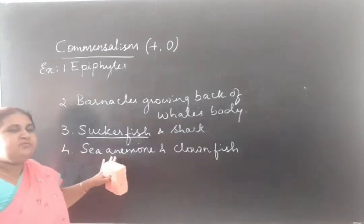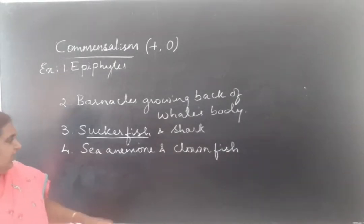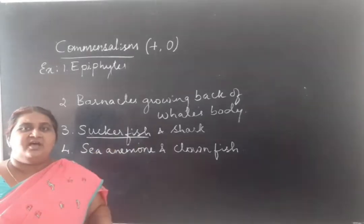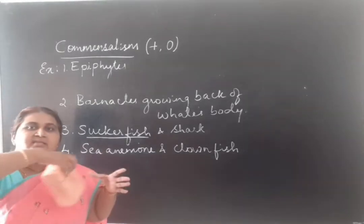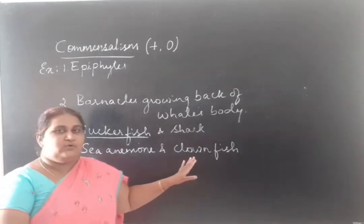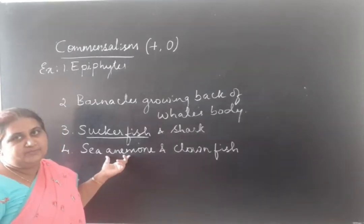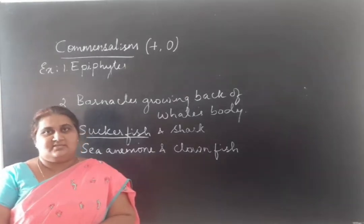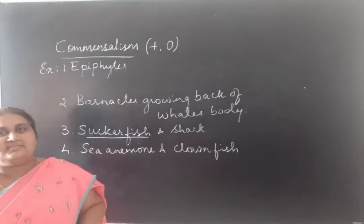Sea anemone and clownfish. The sea anemone is a sedentary animal attached to the base stratum, with tentacles on its upper surface. Within the tentacles there are special stinging cells. The clownfish lives between these tentacles to get protection from its predators using the sea anemone's stinging cells. So the clownfish is benefited, taking the help of the sea anemone to be protected from its predators.